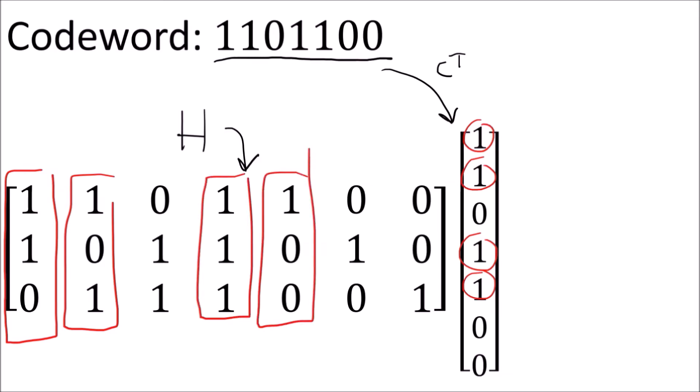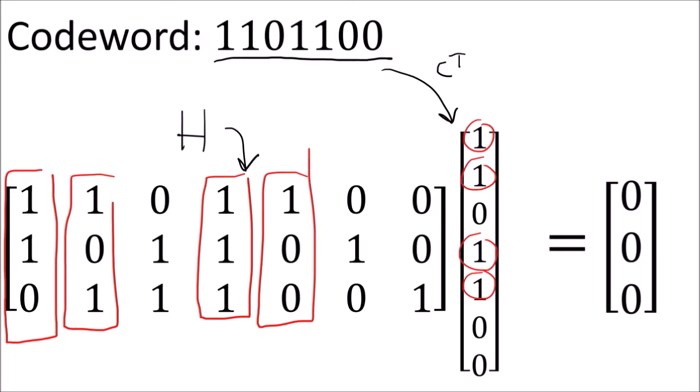If we do that, we find that the rows all have an even number of 1s, and since we're using the XOR operation for addition, the result is a column of all 0s. So since the result is the 0 vector, we've confirmed that this is a valid codeword.